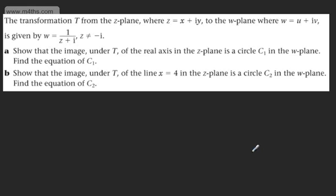In this video, we're going to do another question on complex transformations. The transformation T from the Z-plane, where Z equals X plus iY, to the W-plane, where W equals U plus iV, is given by W equals 1 over Z plus i, where Z does not equal negative i.